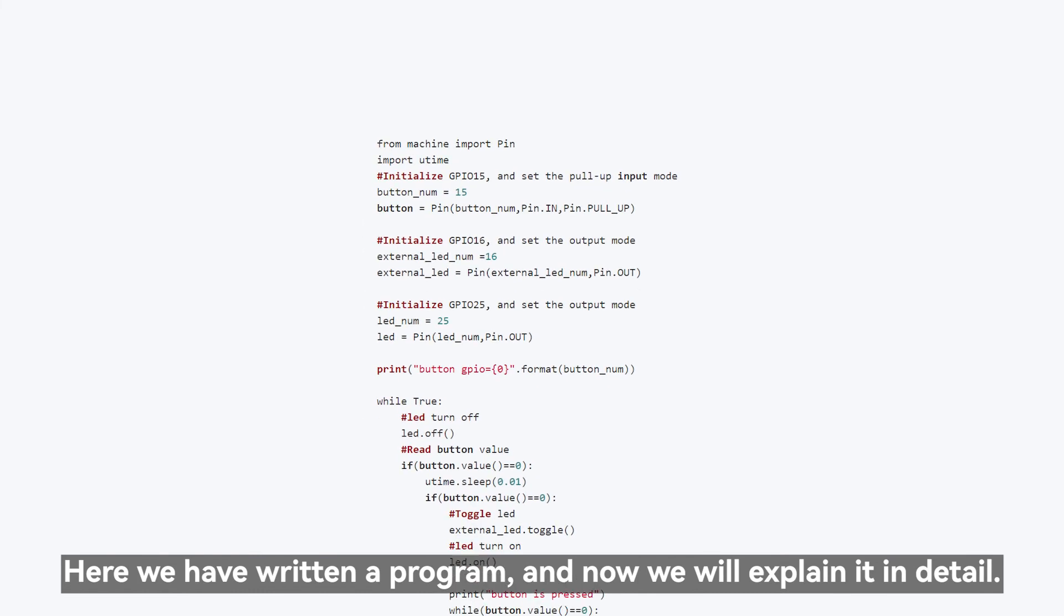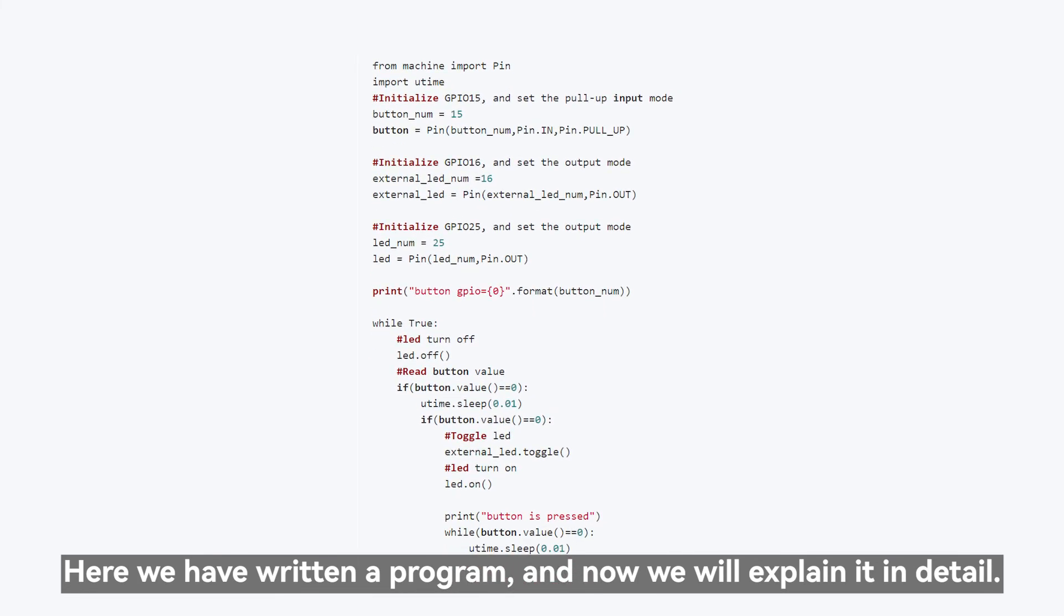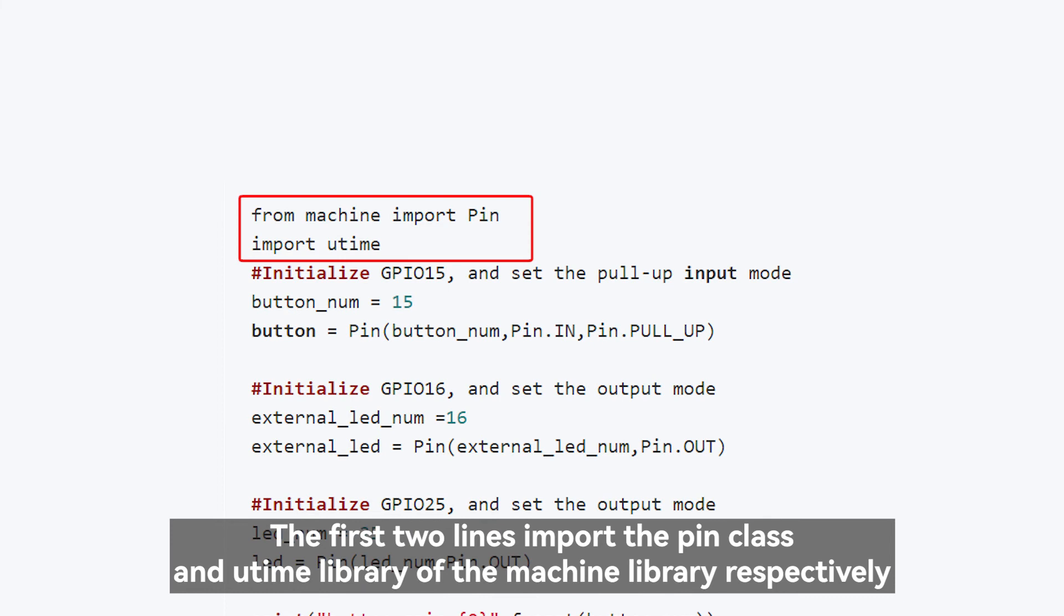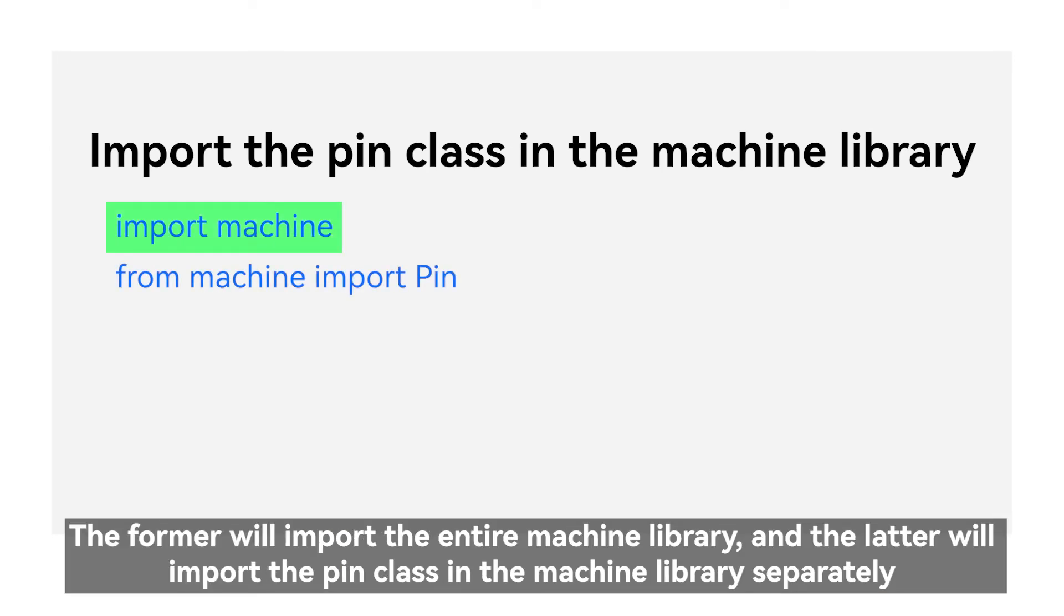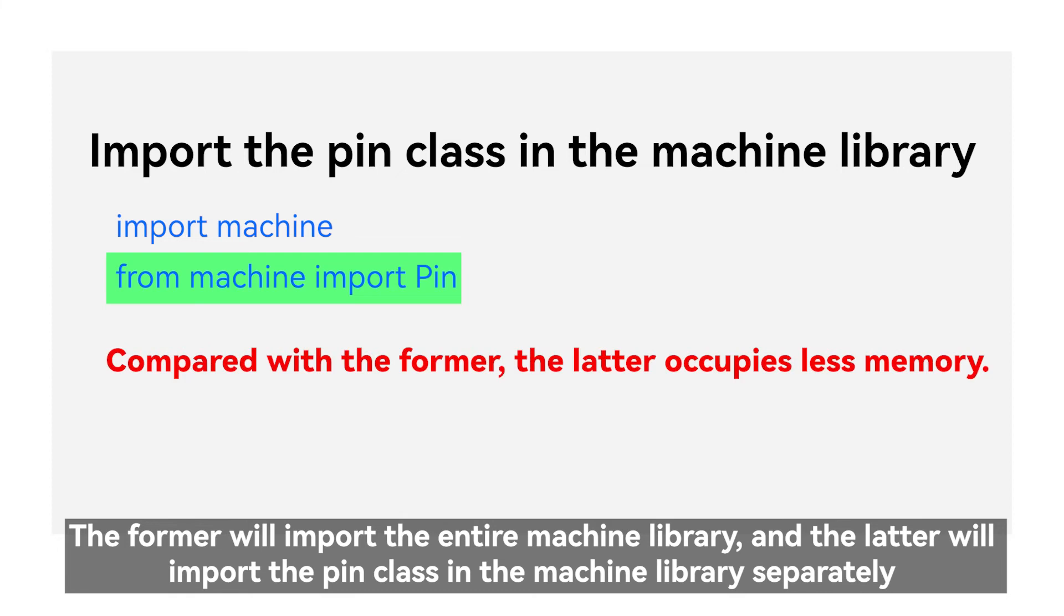Here we have written a program, and now we will explain it in detail. The first two lines import the pin class and utime library of the machine library respectively. Now let's look at two ways to import the pin class in the machine library. The former will import the entire machine library, and the latter will import the pin class in the machine library separately. Compared with the former, the latter occupies less memory.